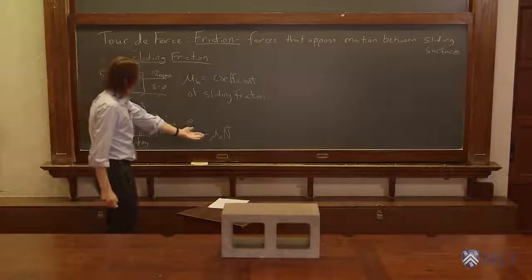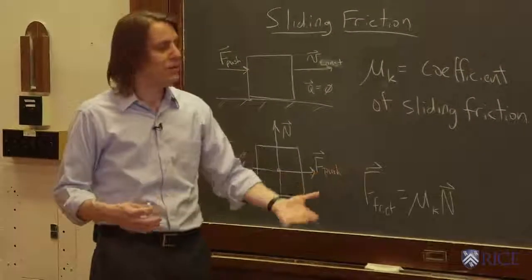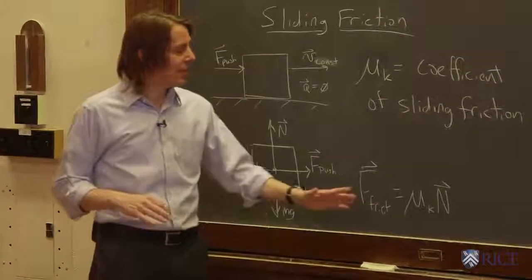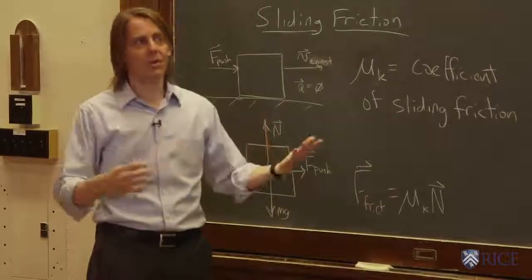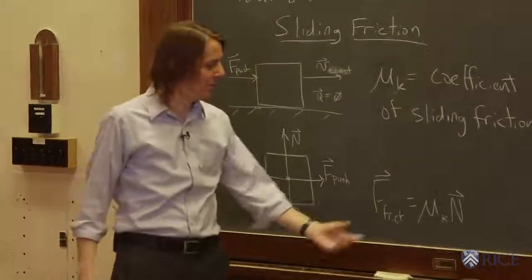And values of μk, it actually depends. Low values can be 0.1, 0.01, really small. If you're on something smooth like ice, it can be very high up to 1. It can be over 1, in fact, for some cases. Geckos can crawl up a wall, right? It can be very high.